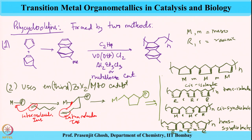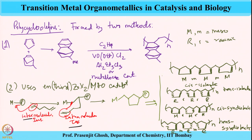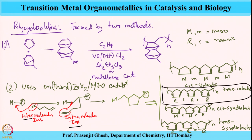These insertions can happen in four ways, and there are two types of insertion — one is intermolecular and the other is intramolecular. These give optically active polycyclic olefins. The best product exclusively produced by this method is trans-isotactic — this is the one which is exclusively produced.